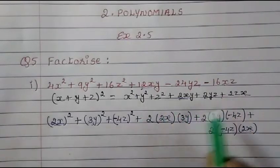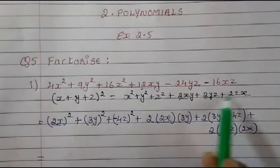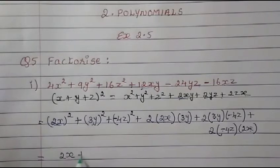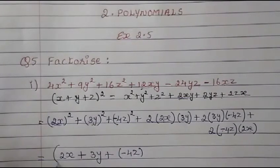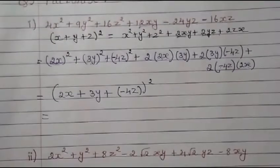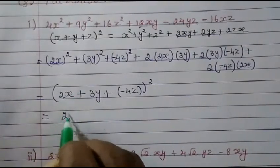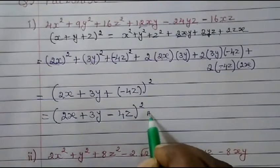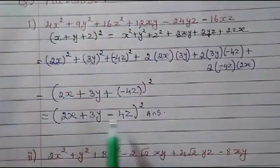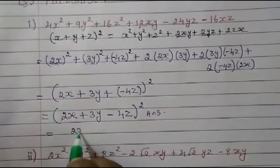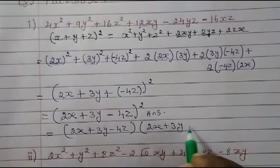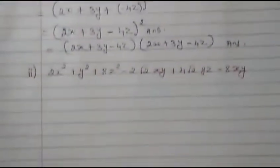So now that we have written everything in that expanded form, we can reduce it. x value is 2x, y value is 3y, and z value is minus 4z — so whole square. Let's write down: (2x + 3y − 4z) whole square. Since it is asked to factorize, we write it in factor form: (2x + 3y − 4z) times (2x + 3y − 4z). That's our answer for sum one.